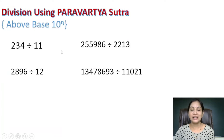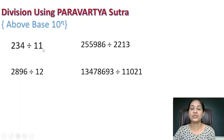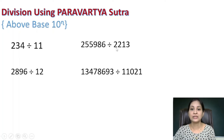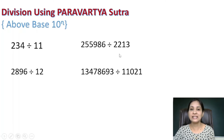There are four examples here. In the first example the divisor is nearer to base 10 — it is 11, slightly more than 10. In the second example the divisor is 12. In the third example the divisor is nearer to 1000 and more than 1000 — it is 2213. In the fourth problem the divisor is more than 10,000. It is very easy to solve these division problems using Paravartya Sutra.